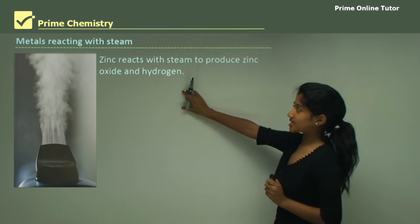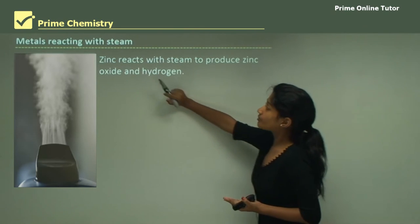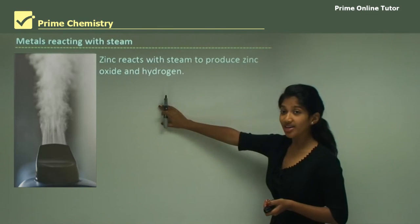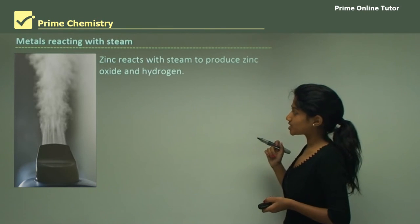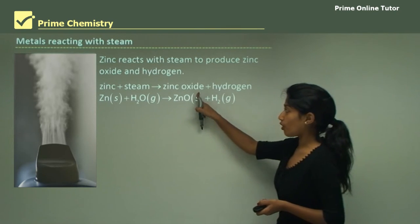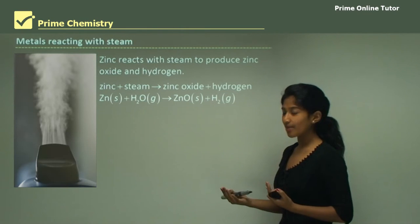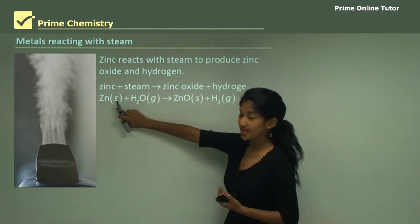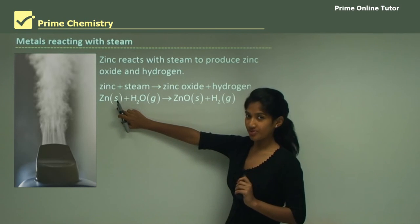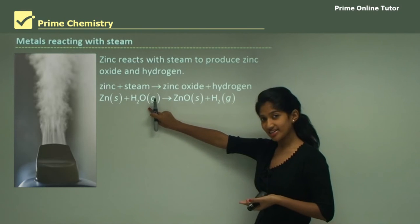Metals also react with steam. For example, zinc reacts with steam to produce zinc oxide and hydrogen. We have zinc and steam reacting to form zinc oxide and hydrogen. When writing the chemical equation, zinc is written as Zn from the periodic table, and steam is water in its gaseous state, so it's H2O.